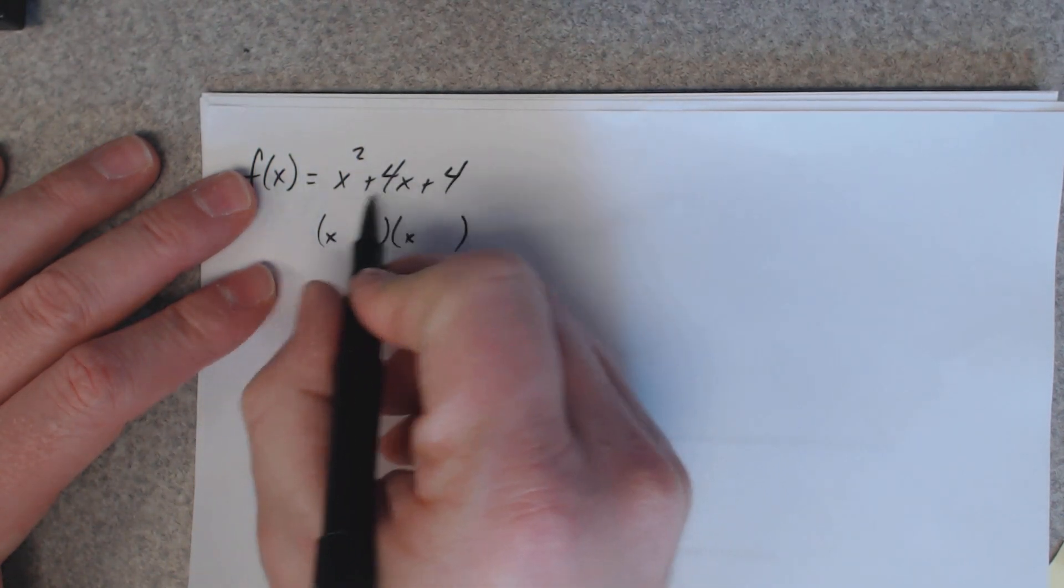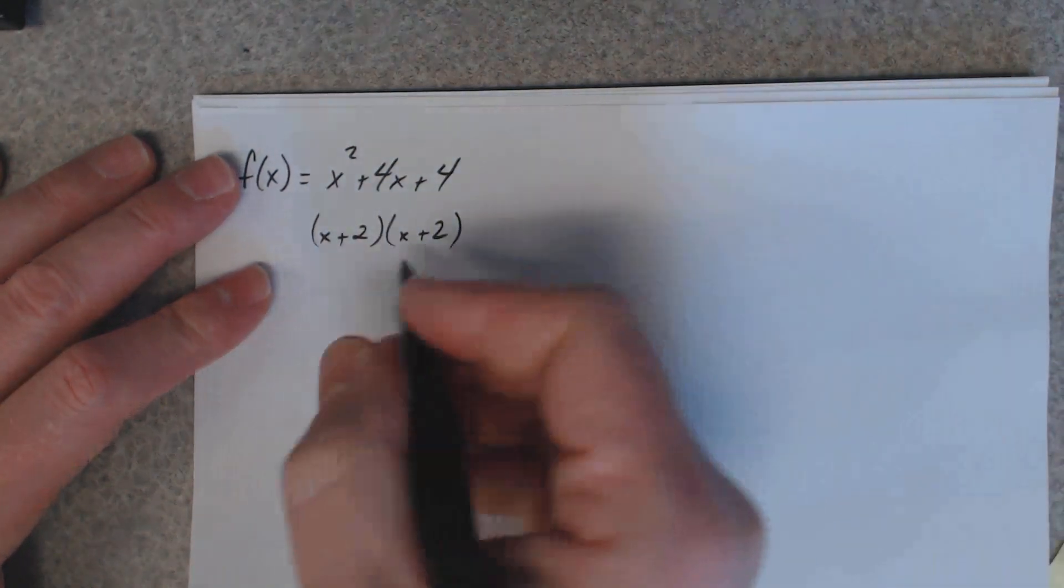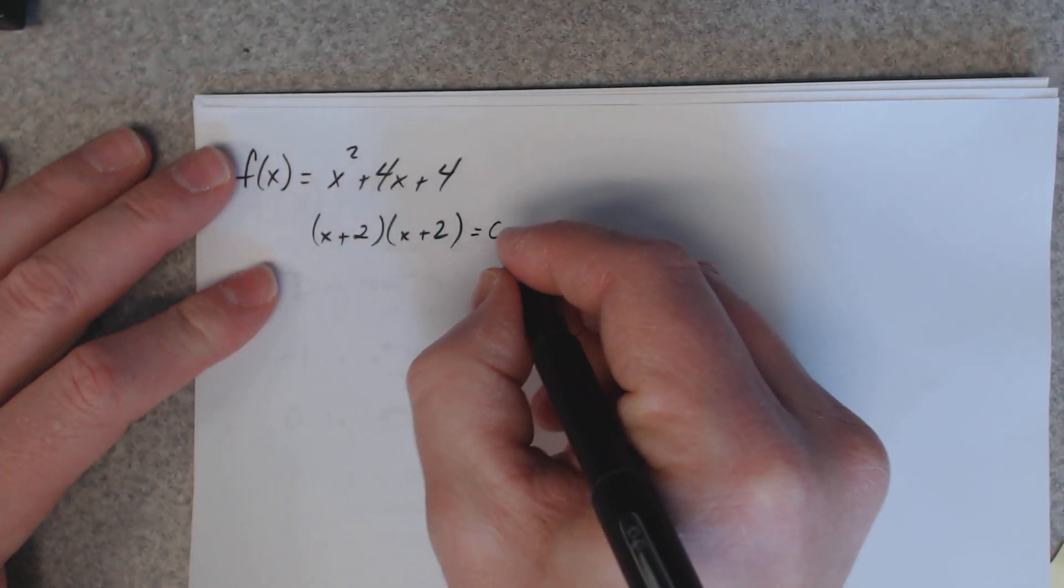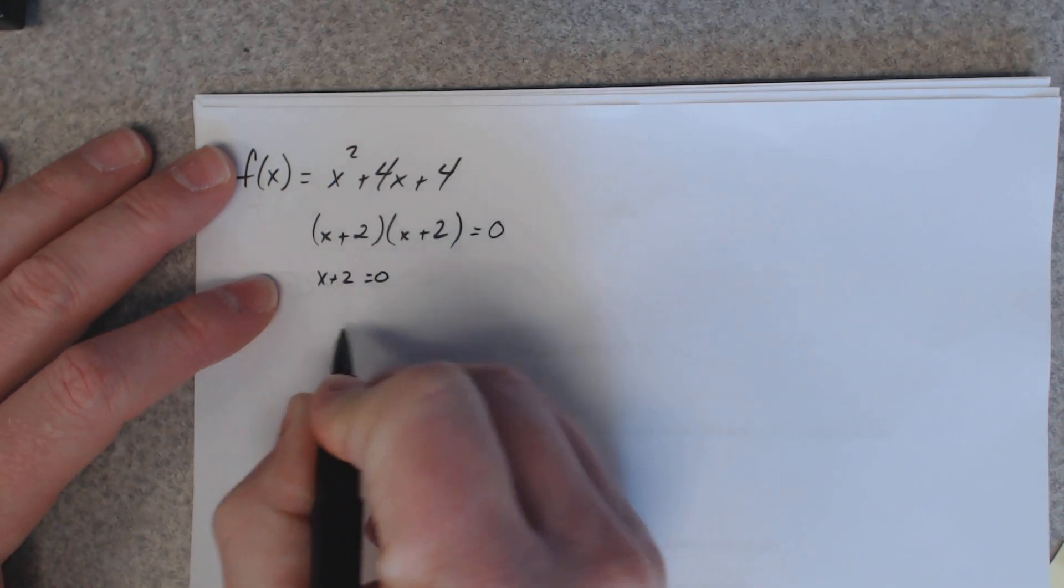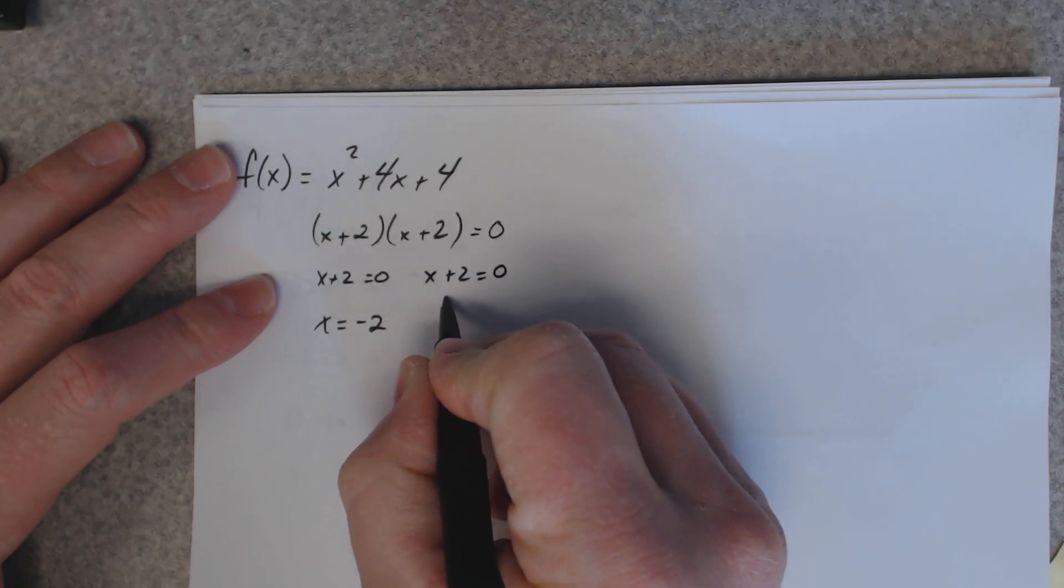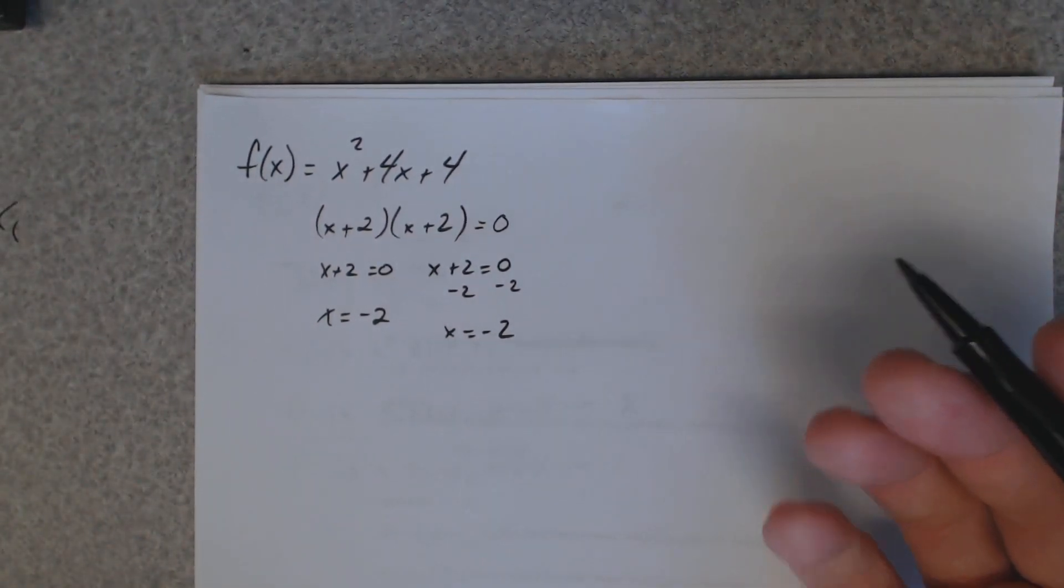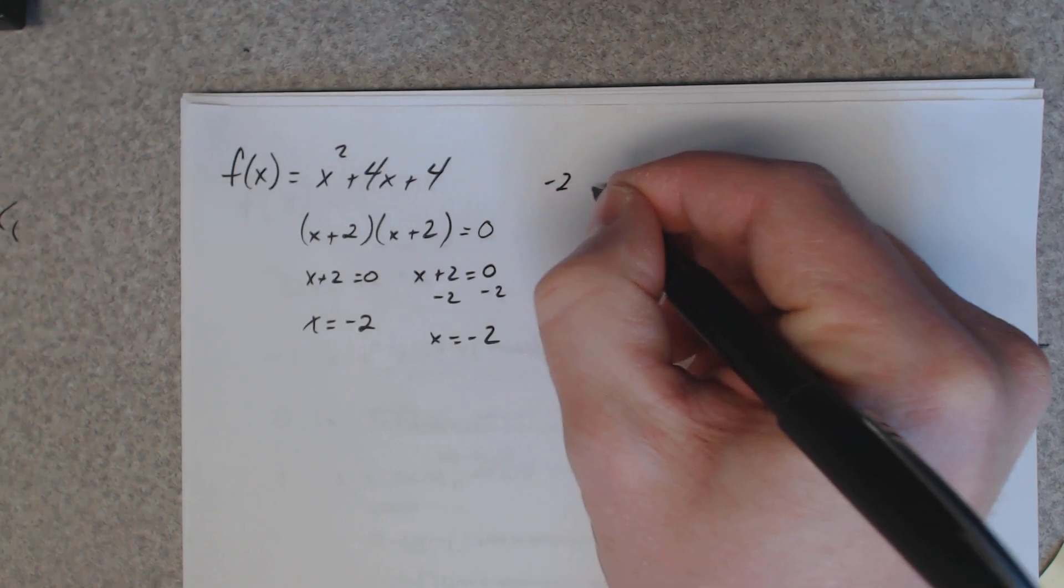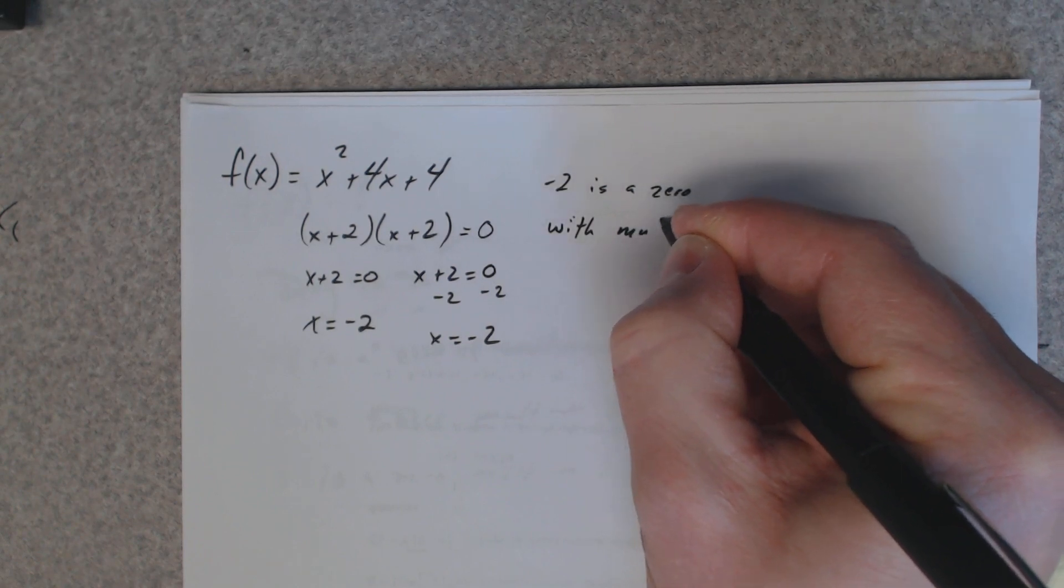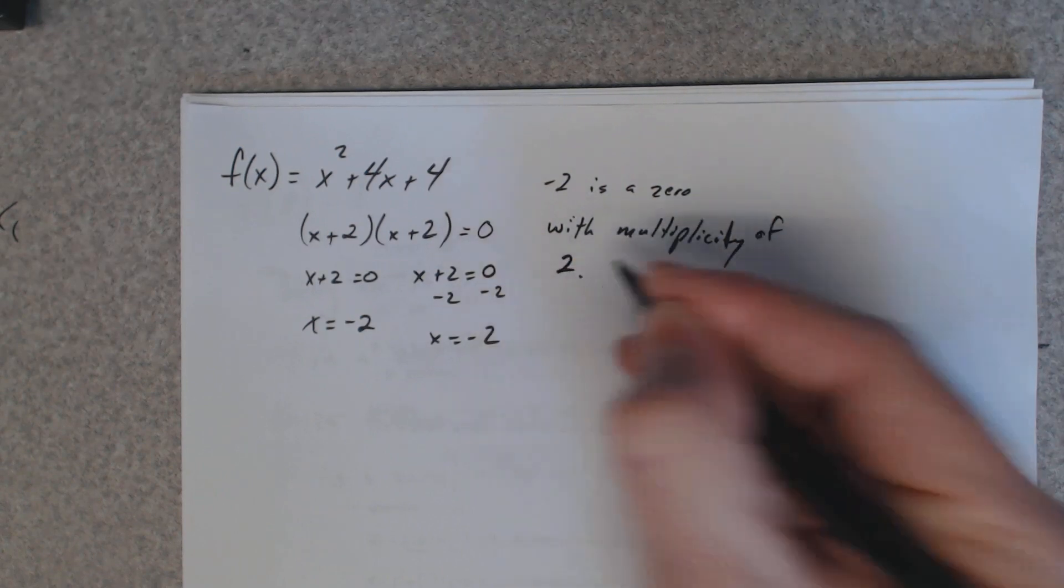And the numbers that multiply to give you 4 and would add to give you 4, looks like 2 and 2. Now x plus 2 times x plus 2 gives you this function here. Now if I set that equal to 0, that means that negative 2 is a zero of that function. There's no point doing that again because I'm going to do the same steps and get negative 2 twice. So what we say is that negative 2 is a zero with multiplicity of 2. It occurs twice.